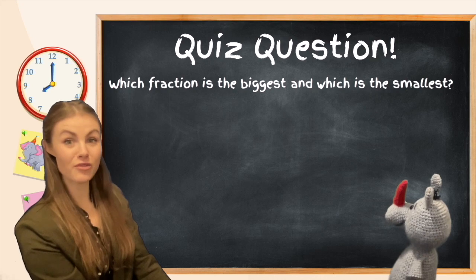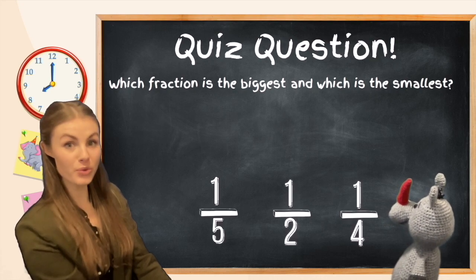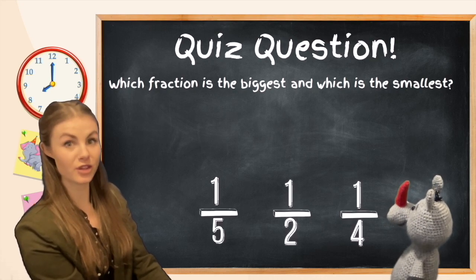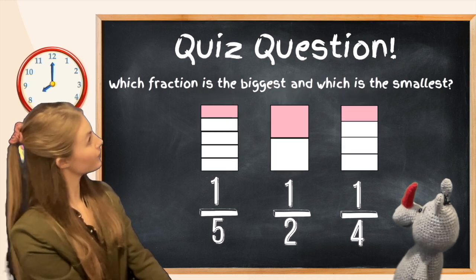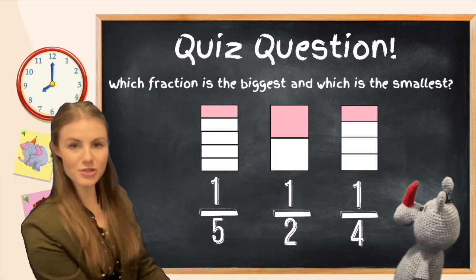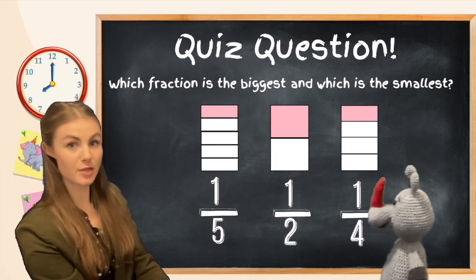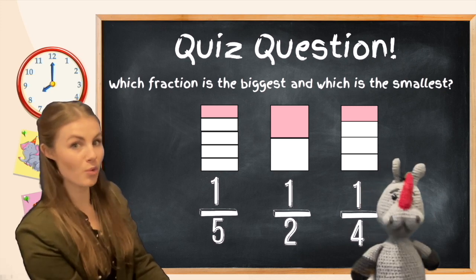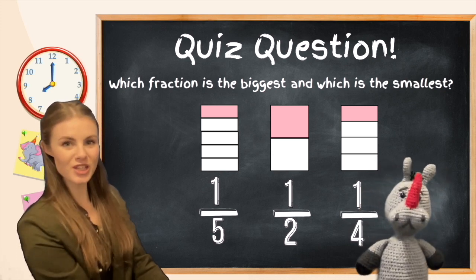So you have three fractions and you've also got the shape representing those fractions. Can you tell me which fraction is the biggest and which fraction is the smallest? Pause the video now.